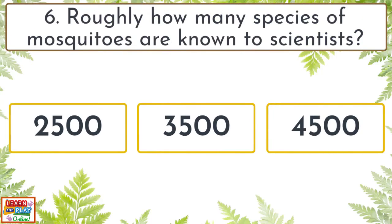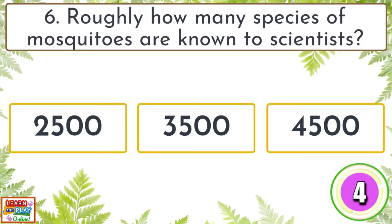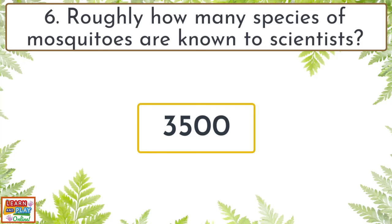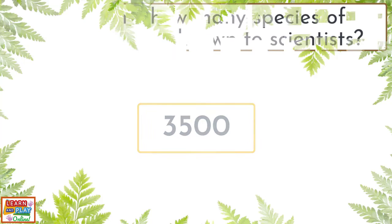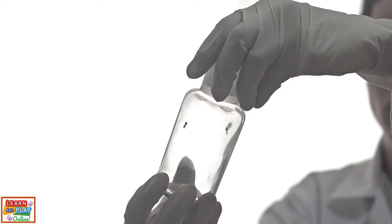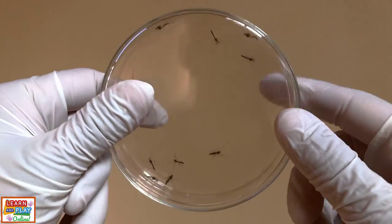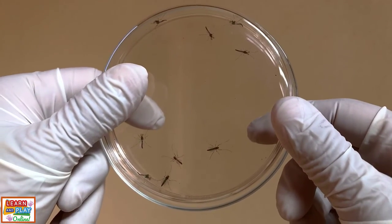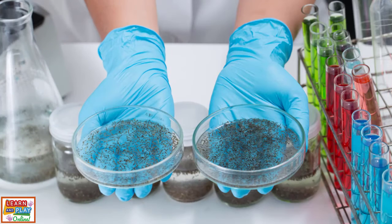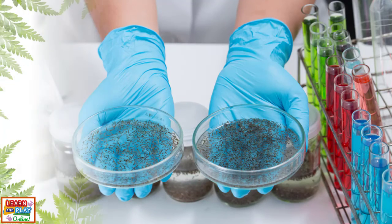Question 6. Roughly how many species of mosquitoes are known to scientists? Scientists have learned many things about mosquitoes, including their behaviour, anatomy and how they carry and spread diseases. To date, they have discovered just over 3,500 different species of mosquitoes from all around the world.